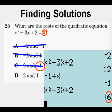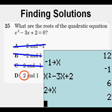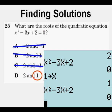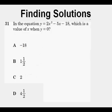By elimination, D is our answer. Being conscientious, we store 2 for x, check the expression, and find it equals zero. We do the same with 1 and see that also equals zero. So D is confirmed as the correct answer.